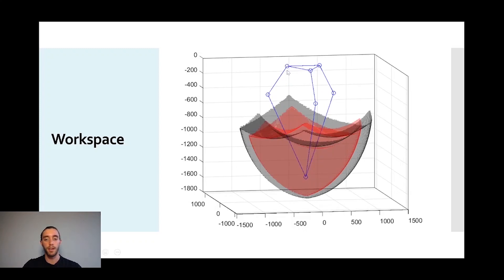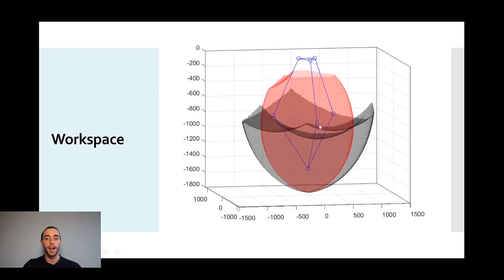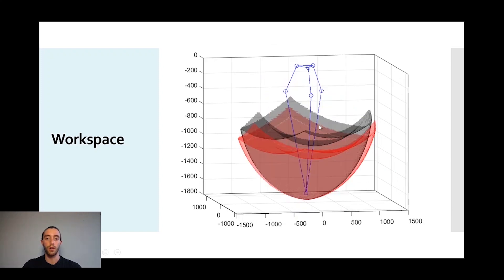If we increase the base platform, we can see that the resulting workspace becomes smaller. And if we decrease it, it will be bigger. And the ratio between the lower and the upper arm will define the height and the width of the workspace.